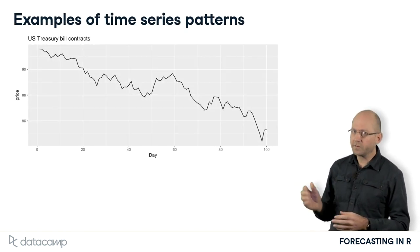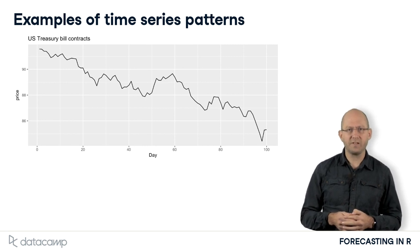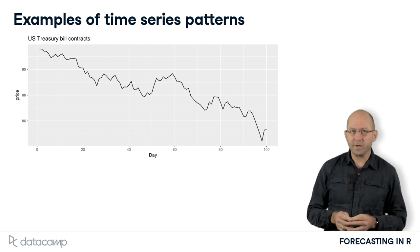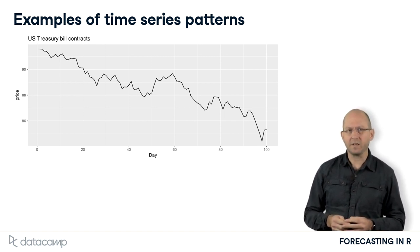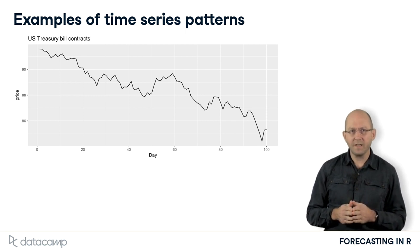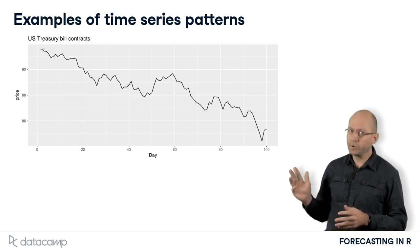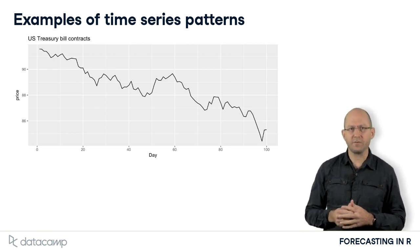The next graph shows US Treasury bill contracts over 100 consecutive days. There is no seasonality here. This looks very much like a downward trend, but it is actually part of a much longer cycle. When you have only a short segment of data and you see only part of a cycle, it can look like a trend. You probably would not want to forecast this series continuing to fall indefinitely.